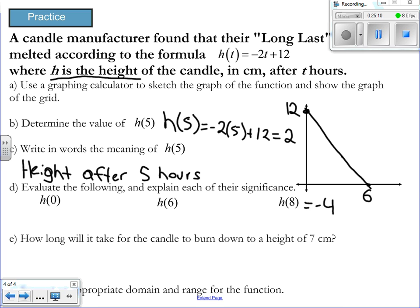How long will it take for the candle to burn down to a height of 7 centimeters? Three and a half hours. You're going to have to set it up like this. You can either look at your graph and figure out where 7 is, and where it intersects and go straight down. Or you can do it by hand of 7 is equal to negative 2t plus 12. Either way, you should get t is equal to what? Not 3 and a half. Two and a half. You should get two and a half hours.